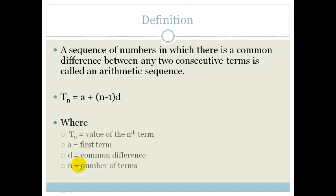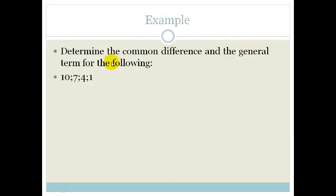Right, but otherwise, let's do some examples just to remind us of what happens. It says determine the common difference and the general term for the following. So you've got 10, 7, 4, and 1. So to do this nice and slowly, we've got our first term is equal to 10, our second term is equal to 7, our third term is equal to 4.